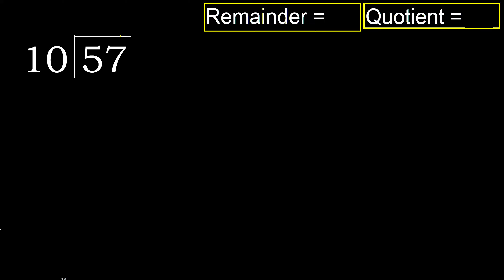57 divided by 10. 5 is less, therefore next. 57 is not less, therefore with 57 — 10 multiplied by which number is nearest to 57 but not greater?